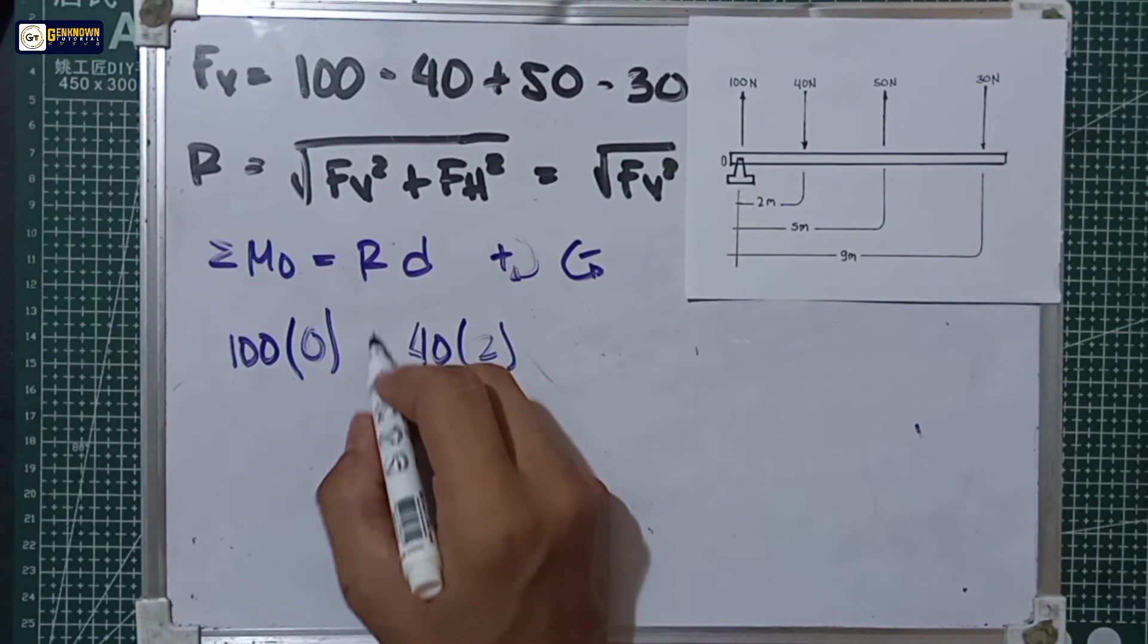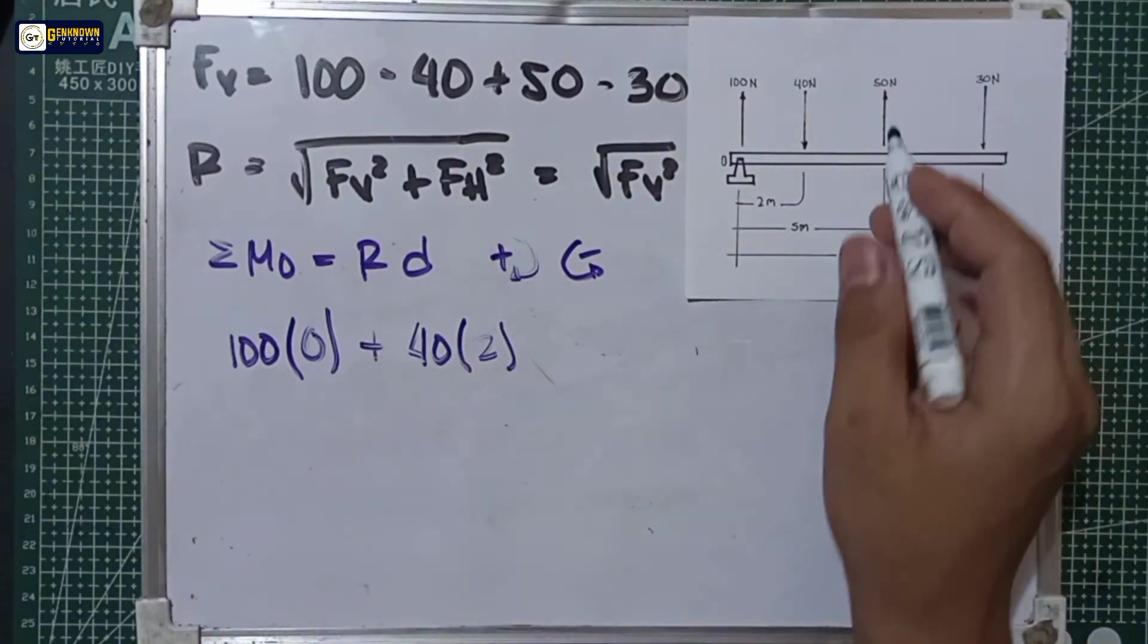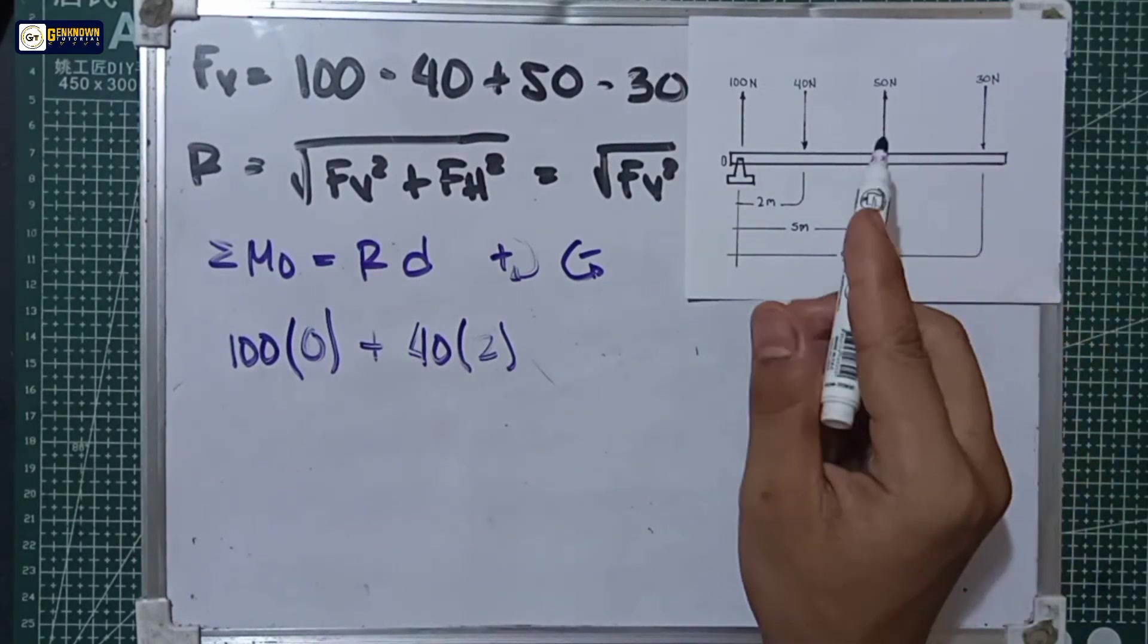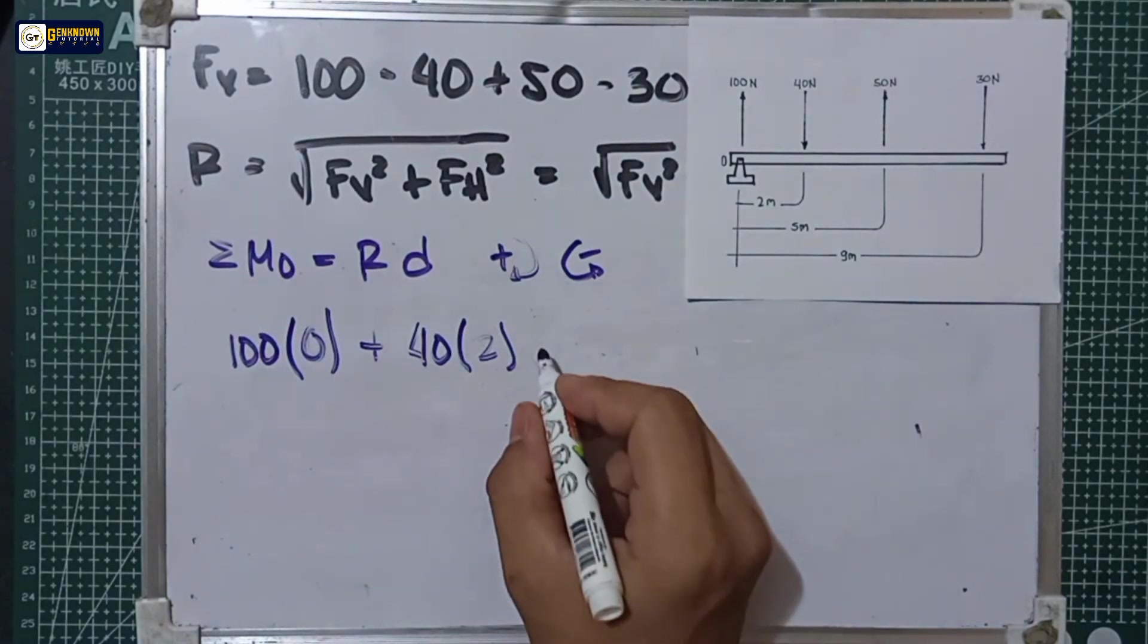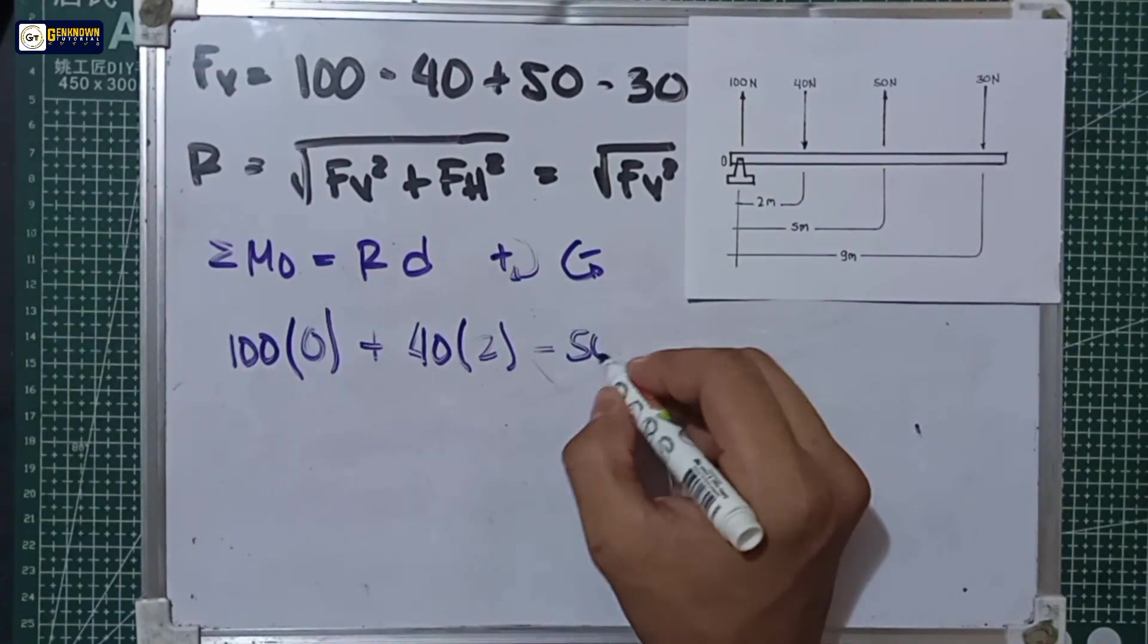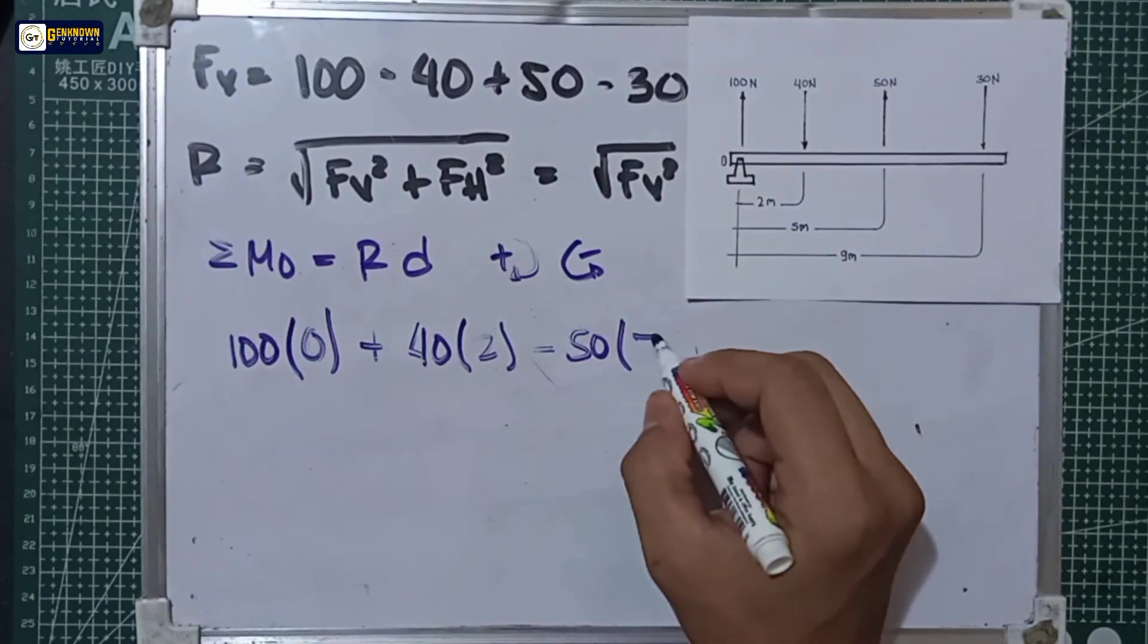We have also 50 newtons. It rotates counterclockwise, so negative. Negative 50 multiply by 5 meters.